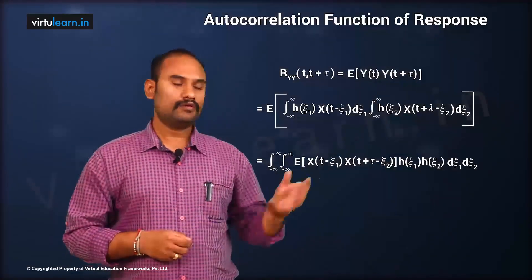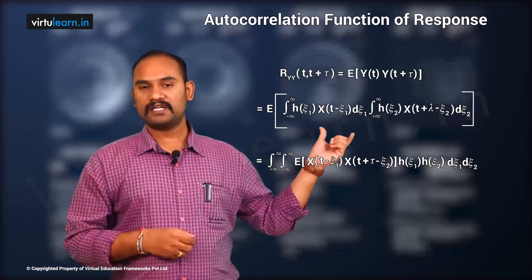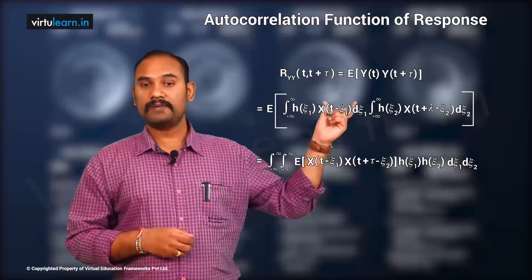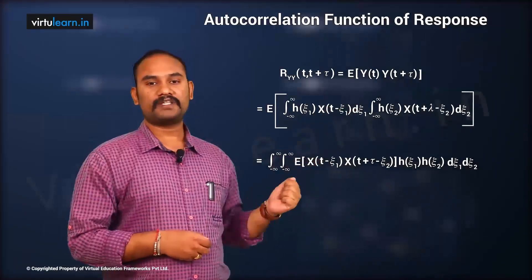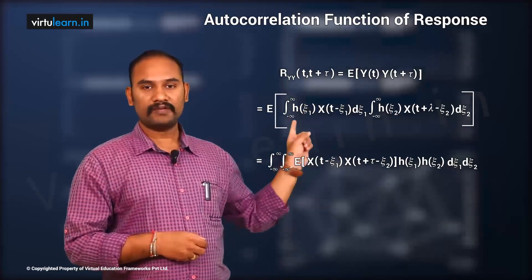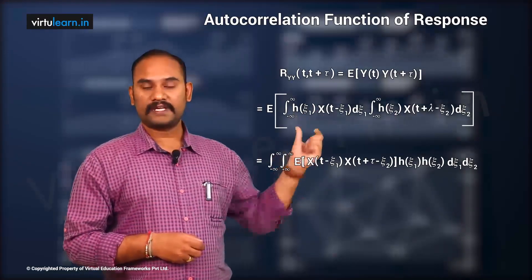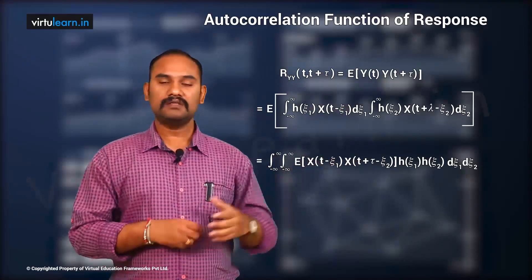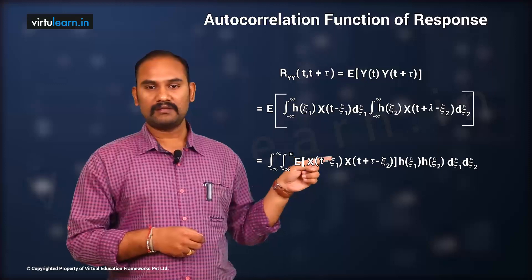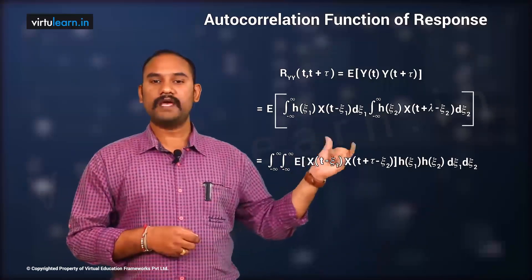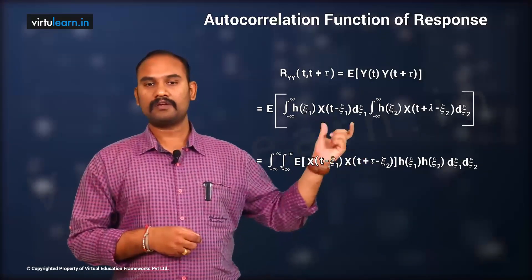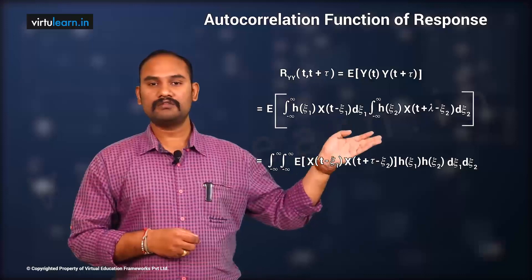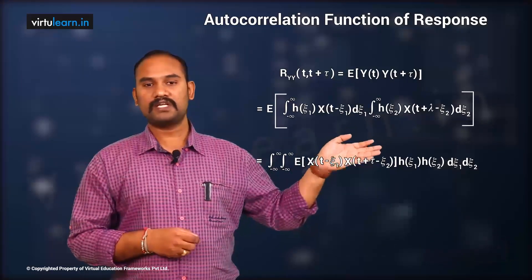We take x(t − ζ₁) from the first integral and x(t + τ − ζ₂) from the second expression, and apply the expectation operation to those x terms. This gives us a double integral: E[x(t − ζ₁) · x(t + τ − ζ₂)] · h(ζ₁) · h(ζ₂) dζ₁ dζ₂.